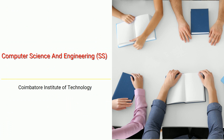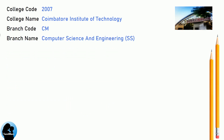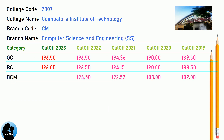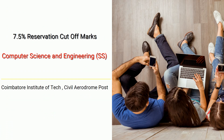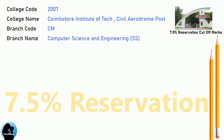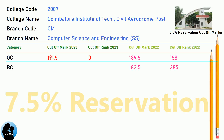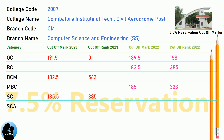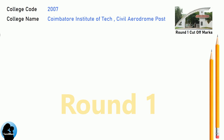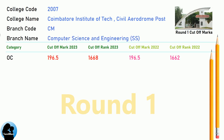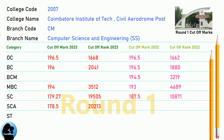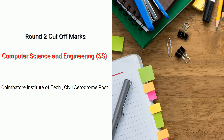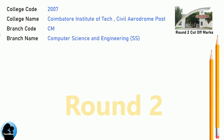DNEA Cut-Off for Coimbatore Institute of Technology in Computer Science and Engineering, SS. DNEA 7.5 Reservation Cut-Off for Coimbatore Institute of Technology in Computer Science and Engineering, SS. DNEA Round 1 Cut-Off for Coimbatore Institute of Technology in Computer Science and Engineering, SS. DNEA Round 2 Cut-Off for Coimbatore Institute of Technology in Computer Science and Engineering, SS.